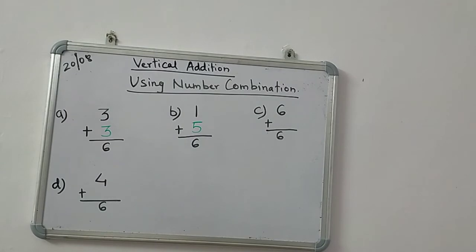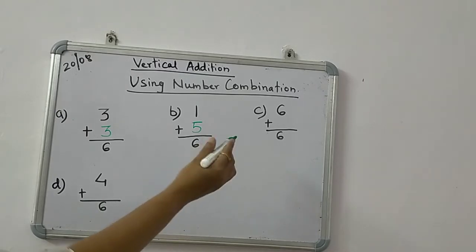Then 6 plus what equals 6? 6 mein aap kya plus karoge ki aapko 6 hi mile? We know that if we add 0 to any number, we will get the same number. So 6 plus 0 is equal to 6.